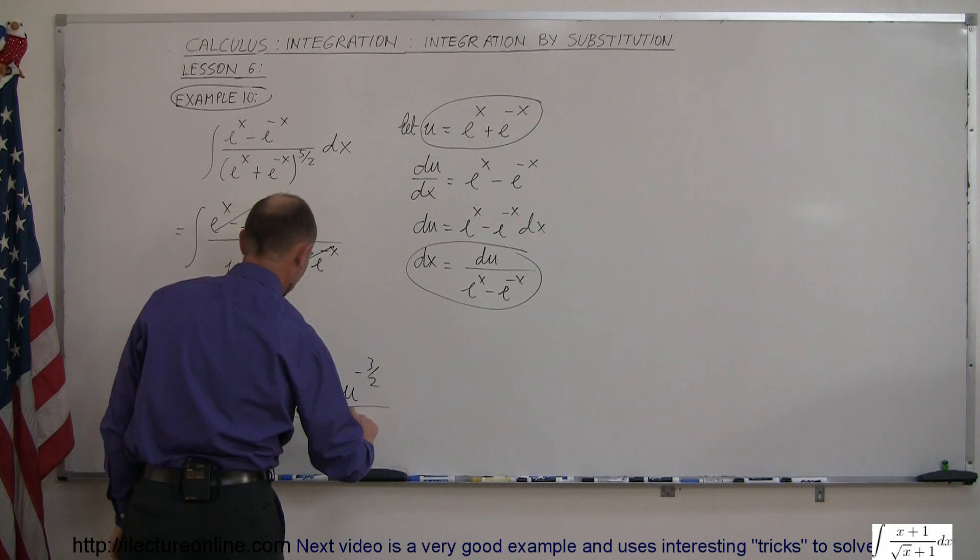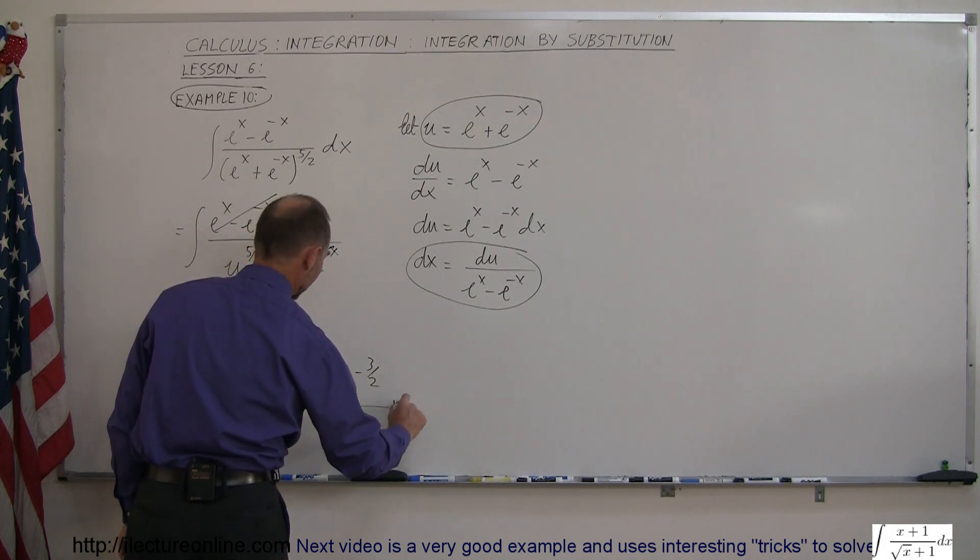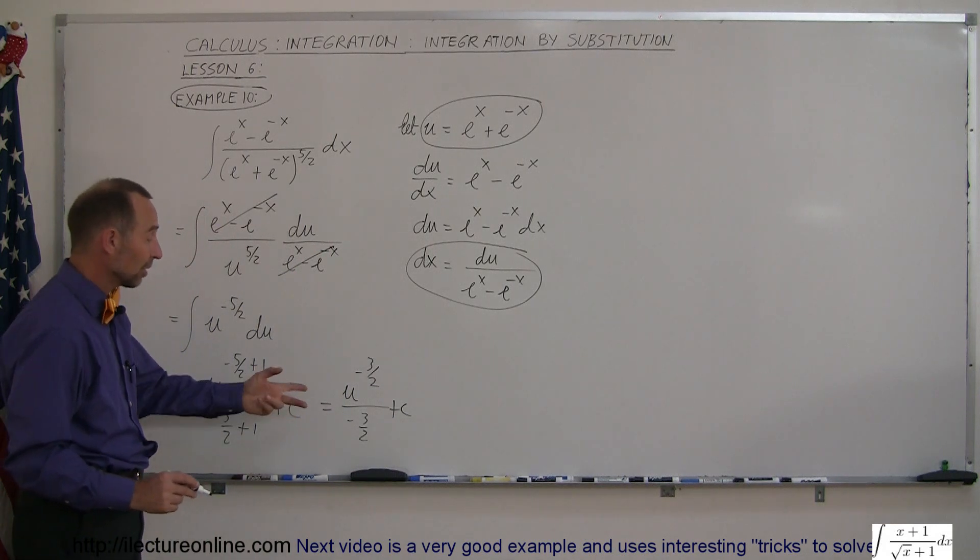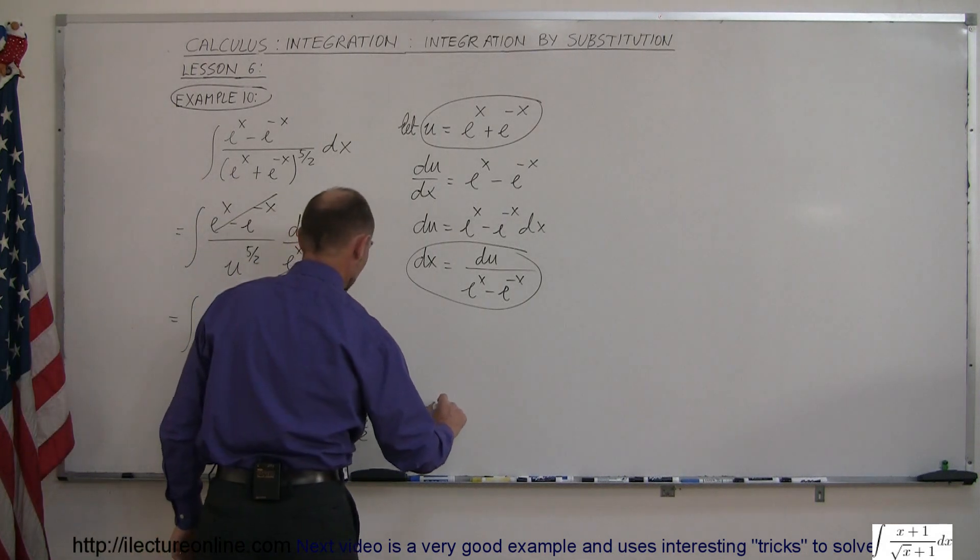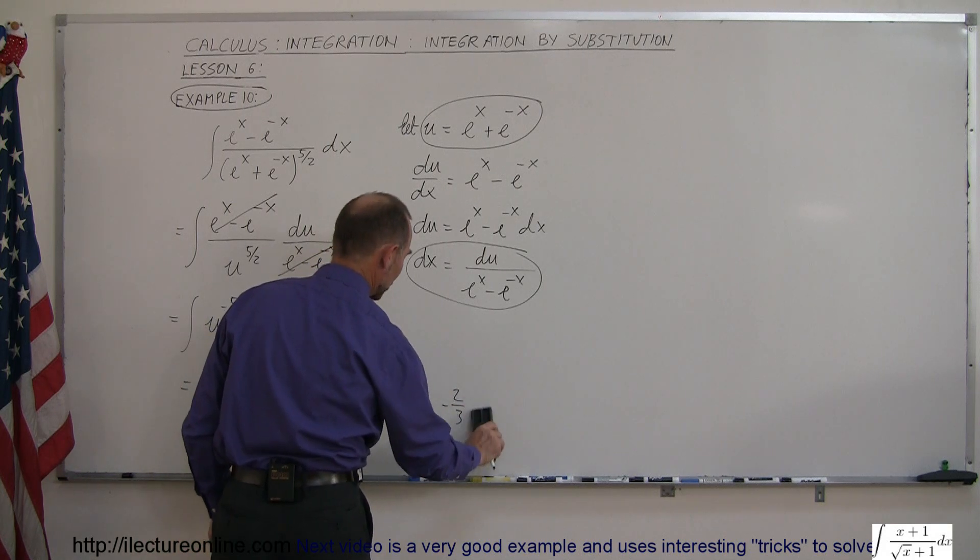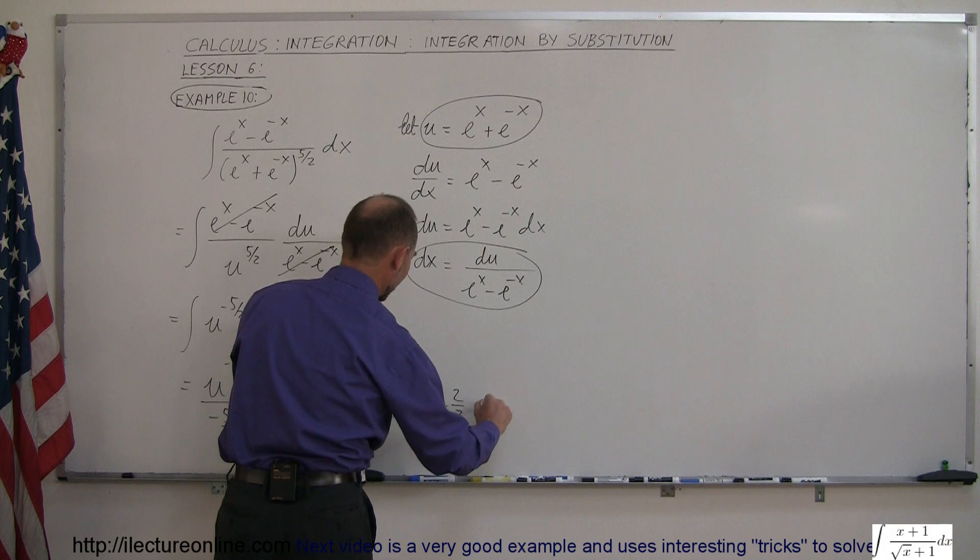Divided by minus three halves plus c, and of course dividing by a fraction same as multiplying by its inverse, so this is equal to minus two thirds times u to the minus three halves power plus c.